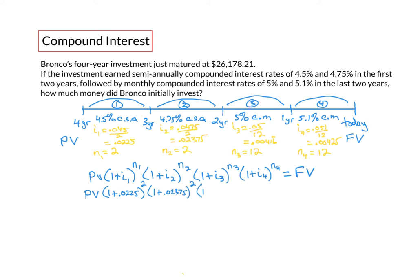Times 1 plus 0.00416 and that line above the 6 means it's repeating and that is to the exponent 12, times 1 plus 0.00425 also to the exponent 12, and that's going to equal our maturity value which is $26,178.21.